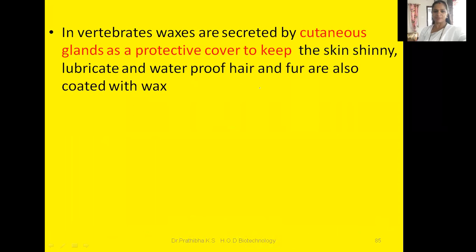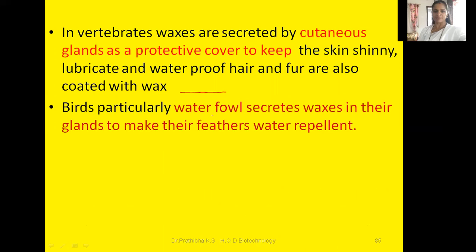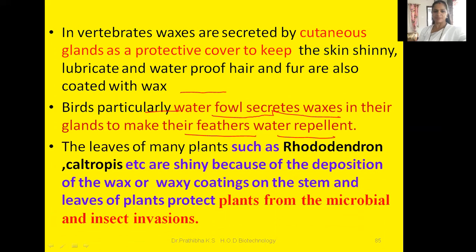In invertebrates, waxes are secreted by cutaneous glands as a protective cover to keep the skin shiny, lubricated, and waterproof. Hair and fur are also coated with wax. Birds, particularly waterfowl, secrete waxes in their glands to make their feathers water-repellent. The leaves of many plants such as rhododendron and similar species are shiny because of waxy coatings on their stems and leaves, which protect the plant from microbial and insect invasions.